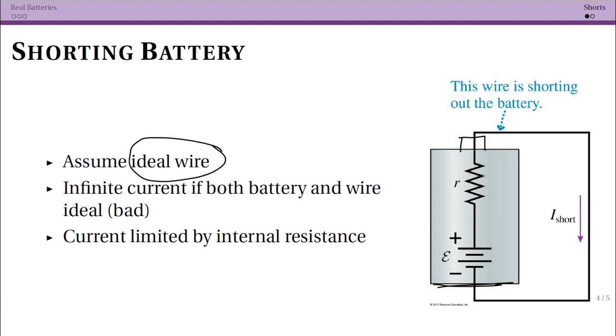Well if it's an ideal wire, that means that the resistance of the wire is equal to zero. Again, a real wire, that isn't quite the case, but an ideal wire, we say that. But now we have a problem if the battery is also ideal.